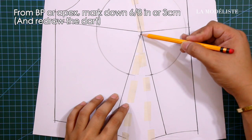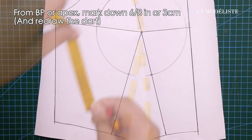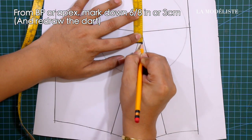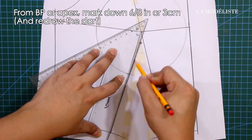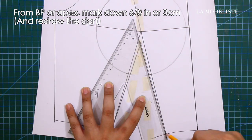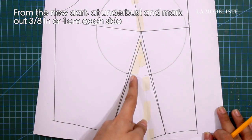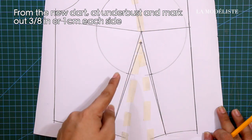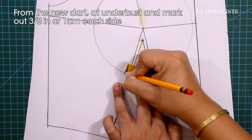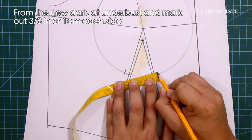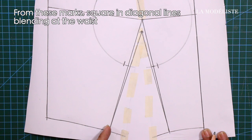Next, from the bust point or apex, mark down 6/8 of an inch or 3 centimeters. From the new dart at the underbust, mark out 3/8 of an inch or 1 centimeter each side. From these marks, square in diagonal lines blending at the waist.